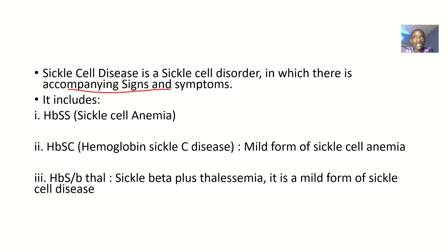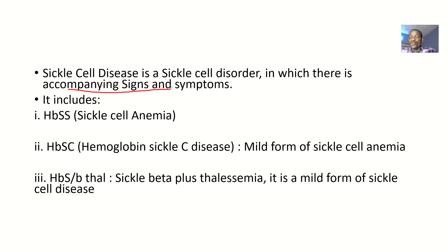Sickle cell trait means somebody can be A-S. They carry the S allele. If they marry another A-S person, they have a 25% chance of having SS children. So in sickle cell disease, you have defects in hemoglobin — the SS genotype and all those.